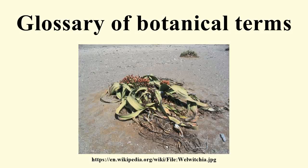Many of the terms used in Wikipedia glossaries are already defined and explained within Wikipedia itself. However, lists like the following indicate where new articles need to be written and are also useful for looking up and comparing large numbers of terms. Terms relating to plant morphology are included here as well as a glossary of plant morphology. See also the list of Latin and Greek words commonly used in systematic names. This glossary is incomplete; you can help by expanding it or by adding illustrations that assist understanding of the terms.